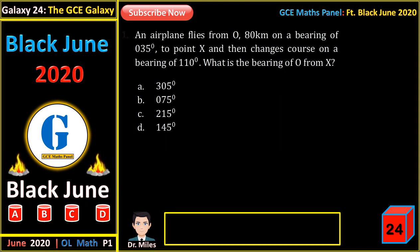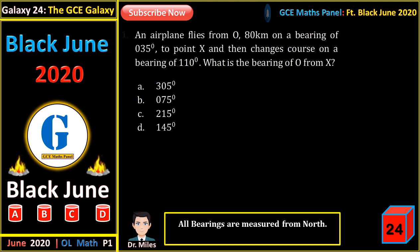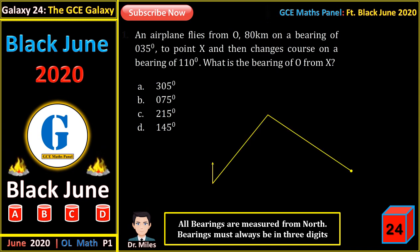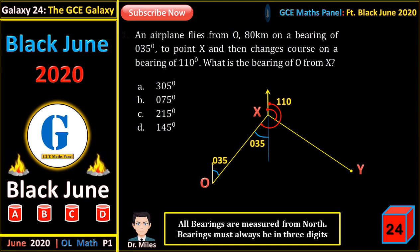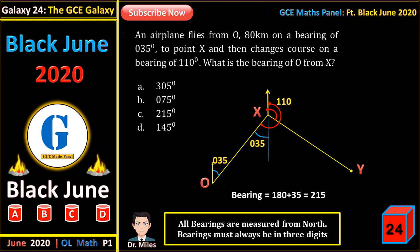An airplane flies from O, 80 kilometers on a bearing of 35 degrees to point X, and then changes course on a bearing of 110 degrees. What is the bearing of O from X? All bearings are measured from north and must always be in 3 digits. Sketching the requirements, the bearing of O from X, measured from north clockwise, is 180 degrees plus 35 degrees. Since the line from O to X is a transversal of the two parallel north lines, these angles are equal. So the bearing gives us 215 degrees.